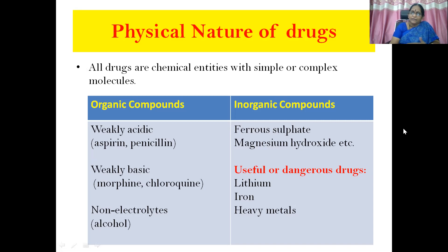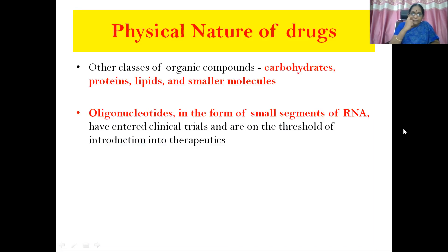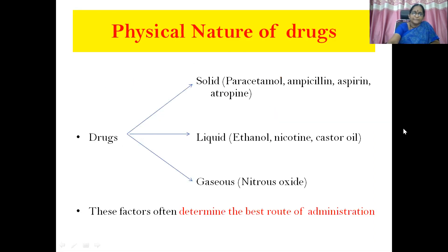Useful or dangerous drugs under inorganic compounds include lithium, iron salts, and heavy metals. Other classes of organic compounds include carbohydrates, proteins, lipids, and smaller molecules. Oligonucleotides in the form of small segments of RNA have also entered the zone of clinical trials and pharmacotherapeutics. Drugs can also be classified by their physical nature as solids, liquids, and gaseous drugs. Solids include paracetamol, ampicillin, aspirin, and atropine tablets; liquids include ethanol, nicotine, and castor oil; and the gaseous form includes nitrous oxide. The solid, liquid, or gaseous nature of a drug determines the best route of administration.